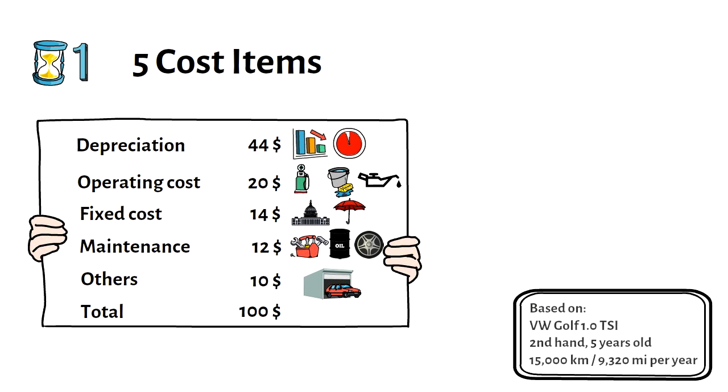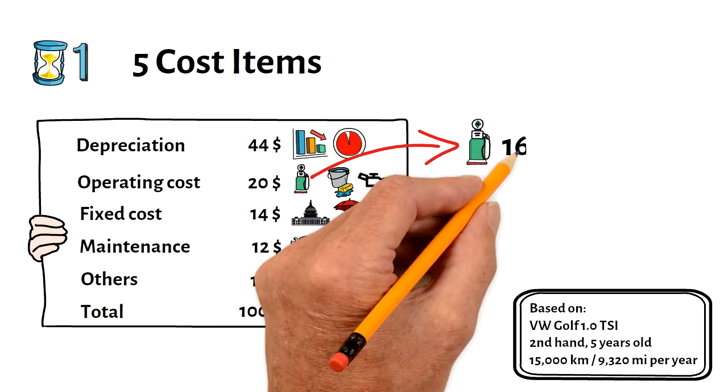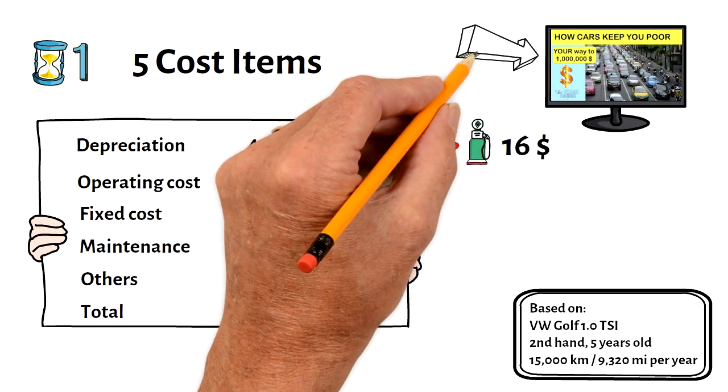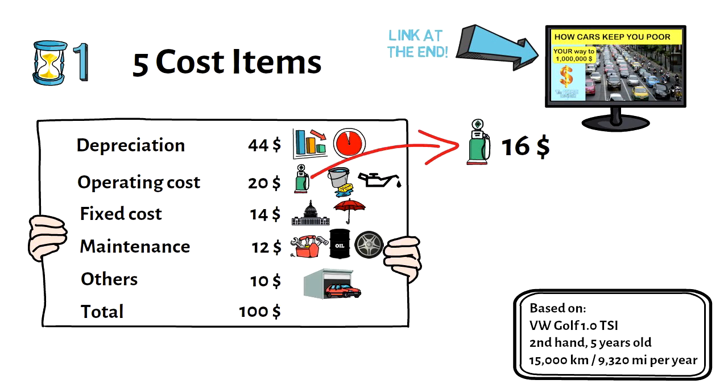The fuel saving tips explained in this video make the majority of operating cost, with $16 out of $100 spent. If you are interested how you can become a millionaire by avoiding the car completely, check out my other video, which I will link at the end. Let's get started.